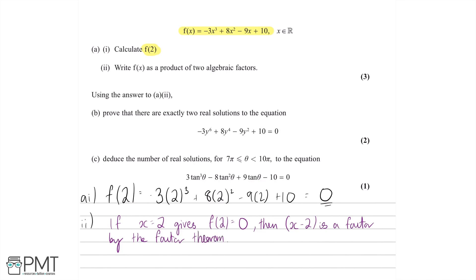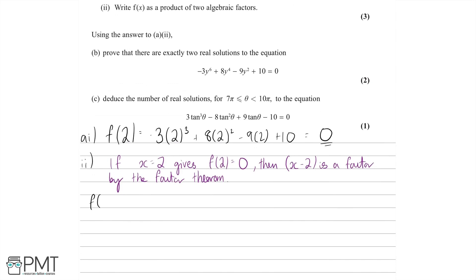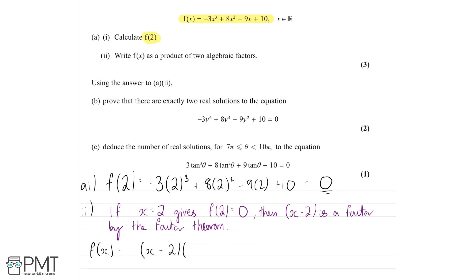Consequently, we can already factorise f of x as x minus 2 times some unknown quadratic. We don't really know what this inside bit is going to be, so let's just use placeholder letters. We know it's going to be quadratic — ax squared plus bx plus c — because if we do a cubic divided by x minus 2, we've reduced the power by 1, so the cubic turns into a quadratic.